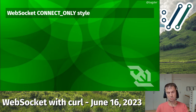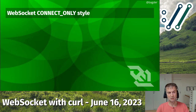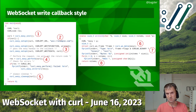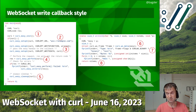At the bottom of the write callback, return the same value you received as input — that tells libcurl everything is fine and to continue. If you don't return the correct value, the transfer will be aborted. Also, from within the write callback you can actually call curl_ws_send as well, if you want to send data back in response to incoming data.